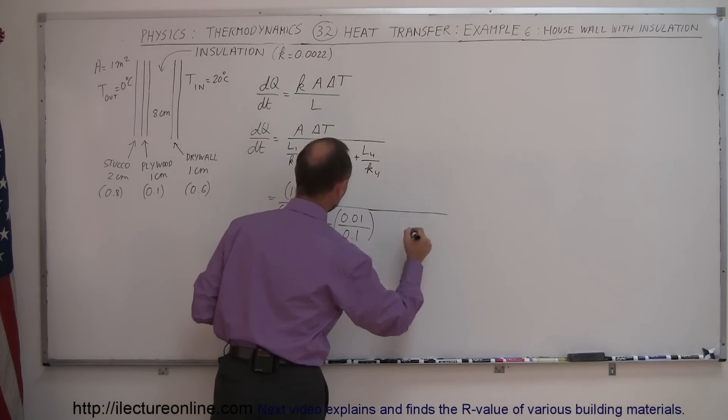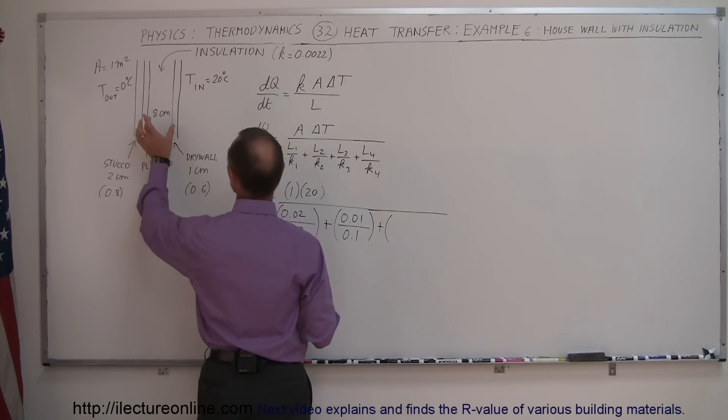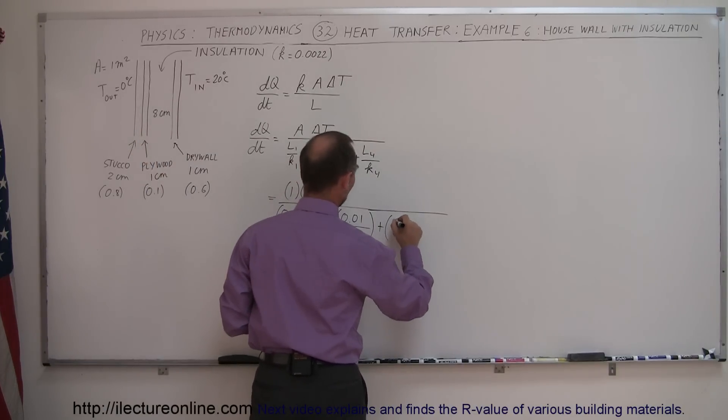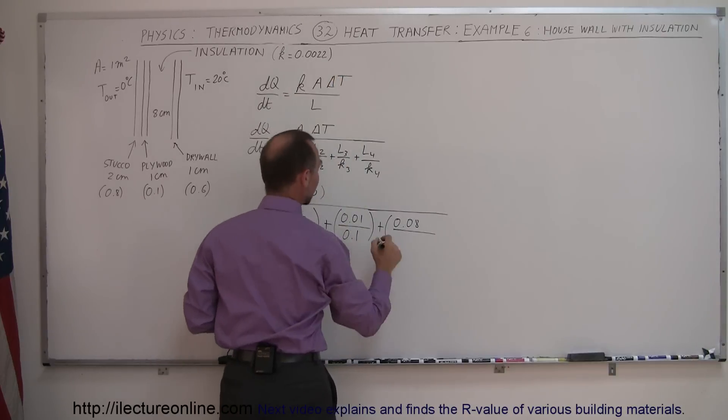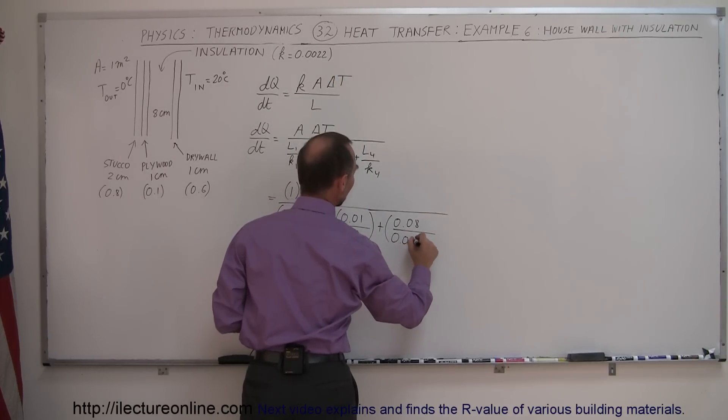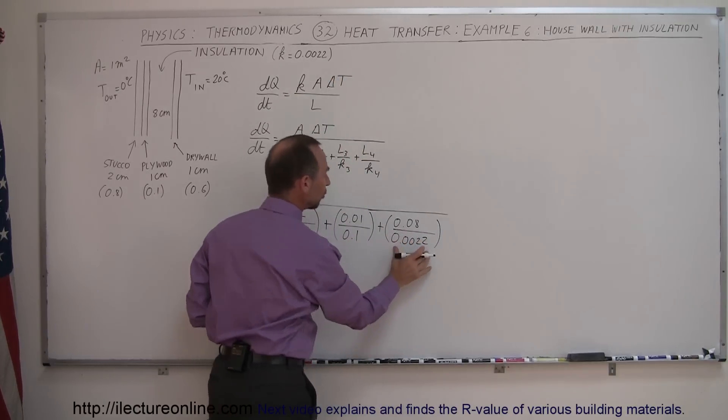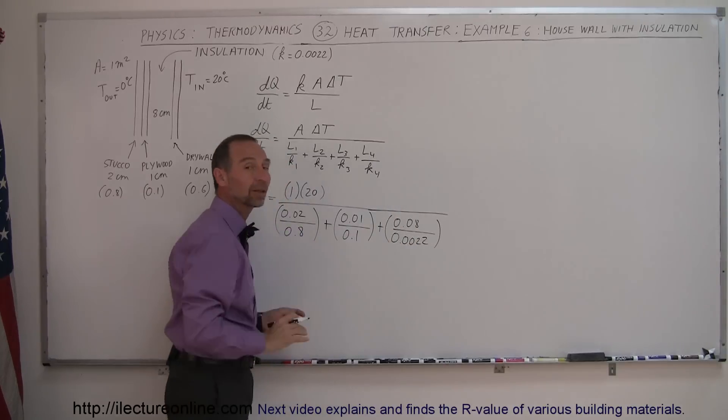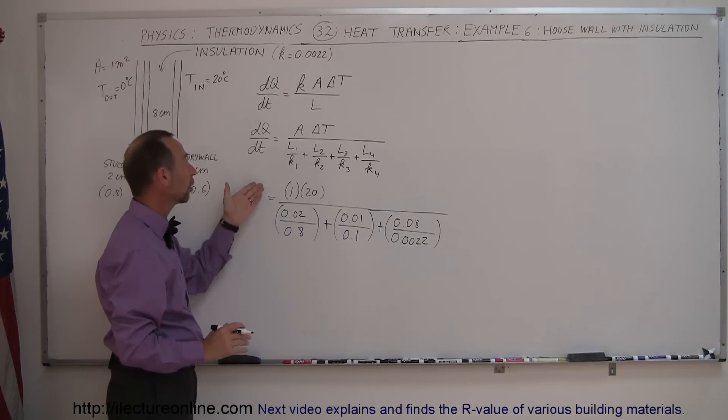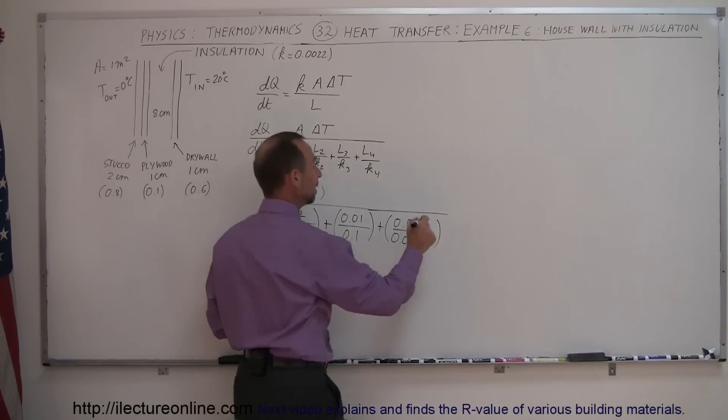But now we have the insulating layer. So we now have a thickness of 8 centimeters, so 0.08 meters, divided by the conductivity constant of 0.0022. Very, very small. So this will be a very big number in the denominator, causing a much smaller ratio for the DQDT.